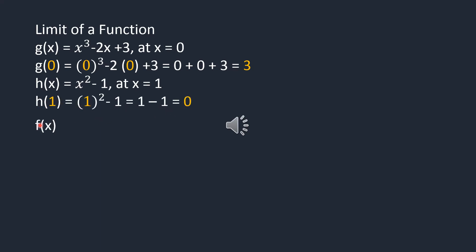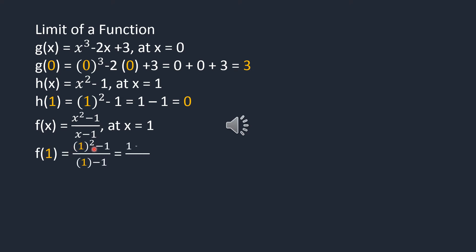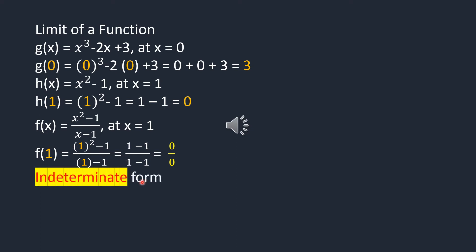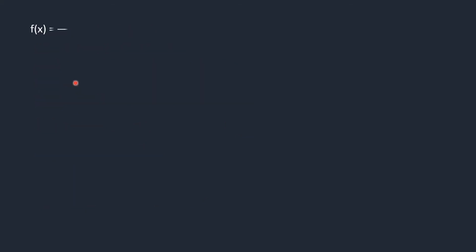Now consider function f(x) equals x squared minus 1 over x minus 1. Its value at x equals 1 will be f(1) equals 1 squared minus 1 over 1 minus 1, which equals 0 over 0. This is called an indeterminate form, and we say that function f(x) is not defined at x equals 1. We will now study the behavior of f(x) as x approaches 1 but does not equal 1.